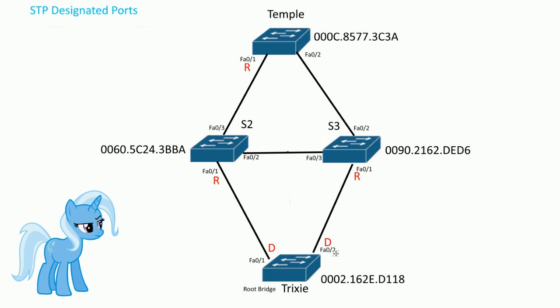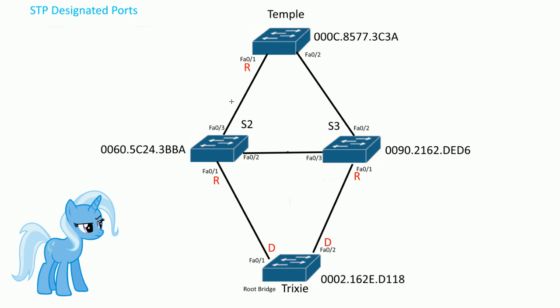Now let's look at the link between Temple and S2. We can see there's a root port on one side, and the other side has to be designated. What the root port is saying is: here's my one path to the root bridge. If the other side were in a blocking state, it would defeat the whole purpose. So this side becomes the designated port on the other side of that link.